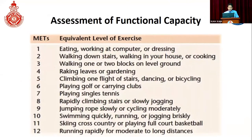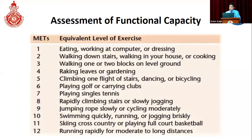Functional capacity can be assessed using METS. We can take a good history and assess functional capacity in the ward or clinic setting, or we can do an exercise ECG to measure METS objectively. Less than 4 METS is considered poor functional capacity, 4 to 10 is moderate, and more than 10 METS in day-to-day activities is considered very good functional capacity.